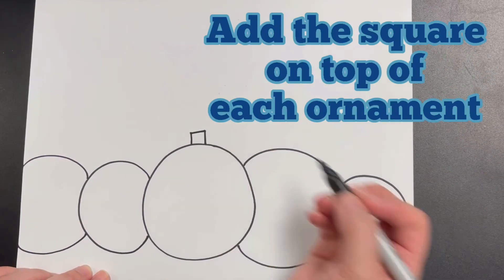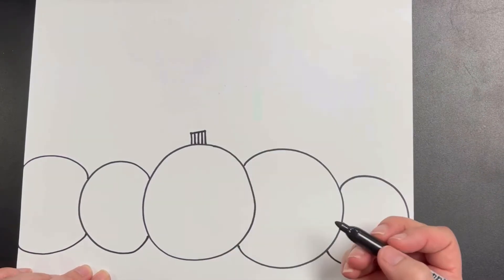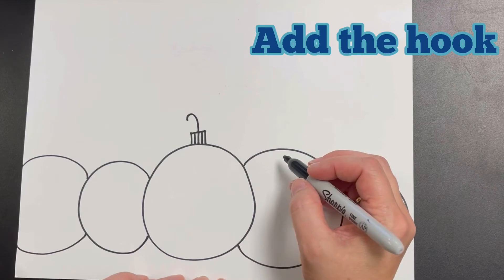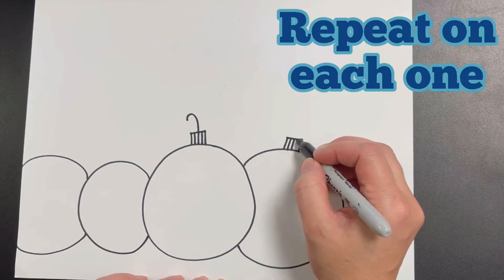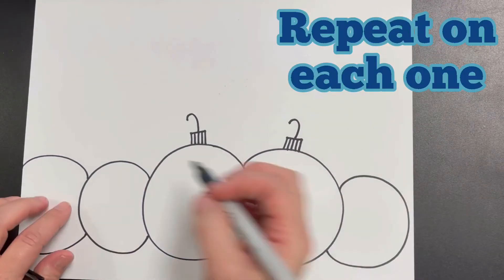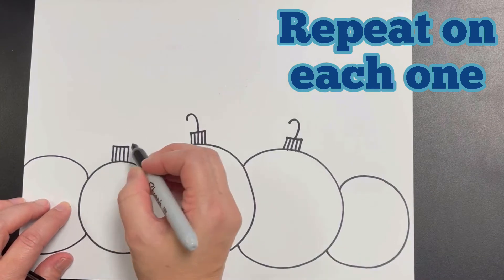Then begin adding little rectangles on top of your ornament with detailed lines and a hook. Repeat that on every single ornament.